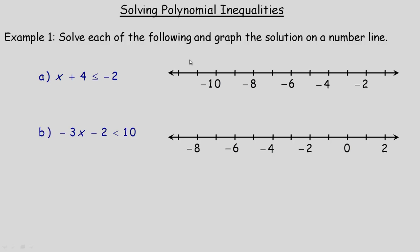The first one would be called a linear inequality because it's x just to the power of 1. So x plus 4 is less than or equal to negative 2. We want to isolate the x, so we subtract 4 from both sides. That gives us just x on the left, and negative 2 minus 4 would be negative 6. So we have x is less than or equal to negative 6.